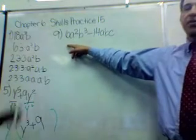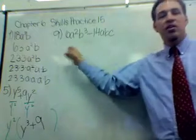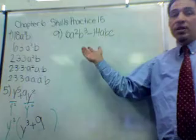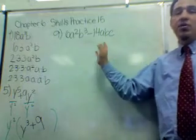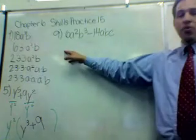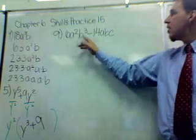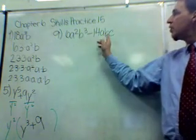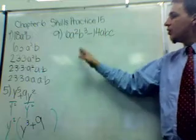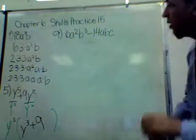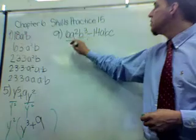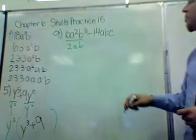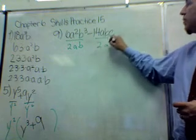Now could we do it by anything else? 3? 3 doesn't go into 14. It goes into 6, it doesn't go into 14, so that won't work. 6 doesn't go into 14, so really 2 is the one that can go into both. So 2 is going to work. a squared and a, or an a, is in common to both, and b is in common to both. c is not. So the thing we're going to factor out by here is 2ab. That's the most we can get out of both of them, 2ab.